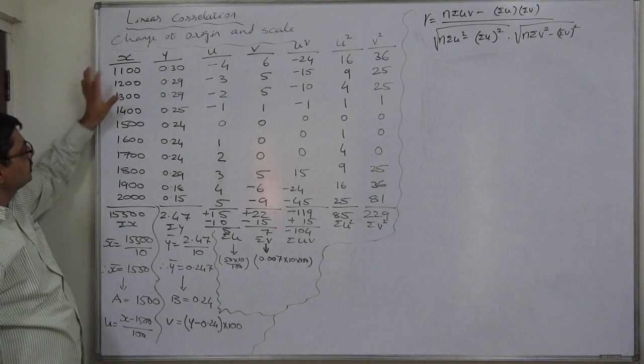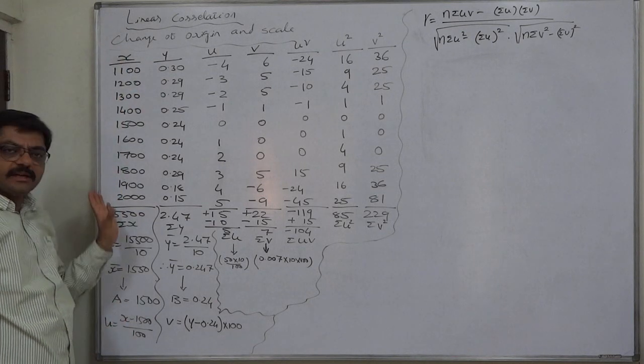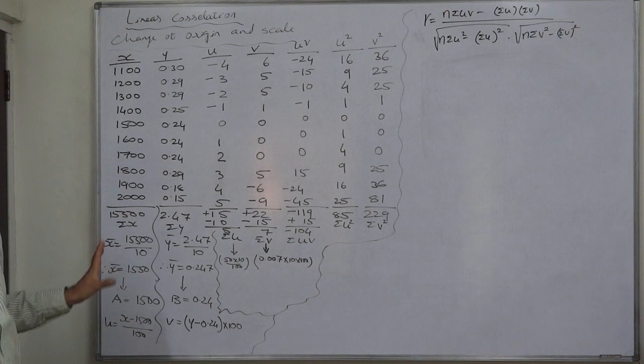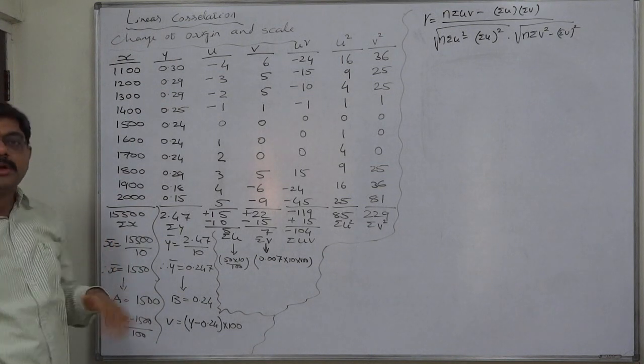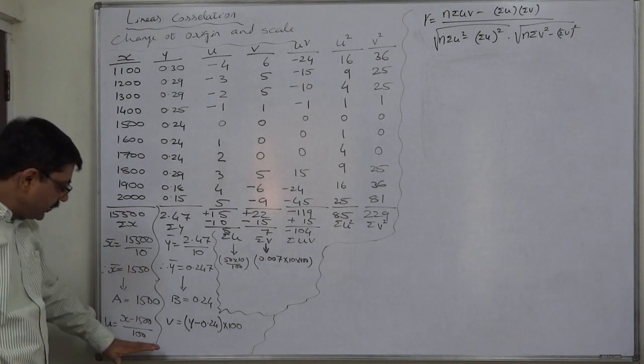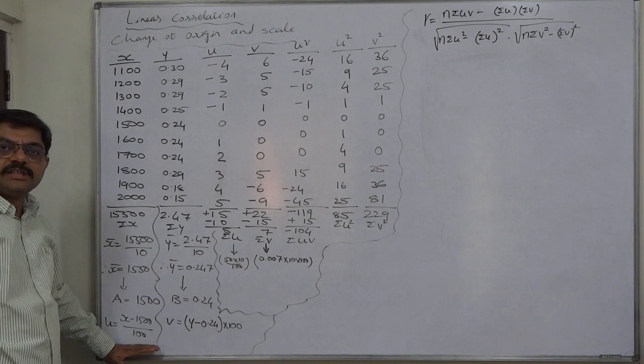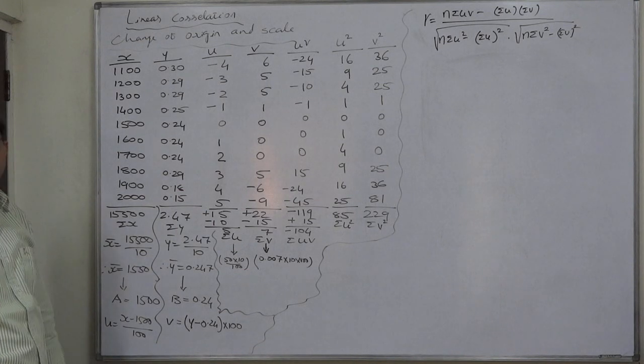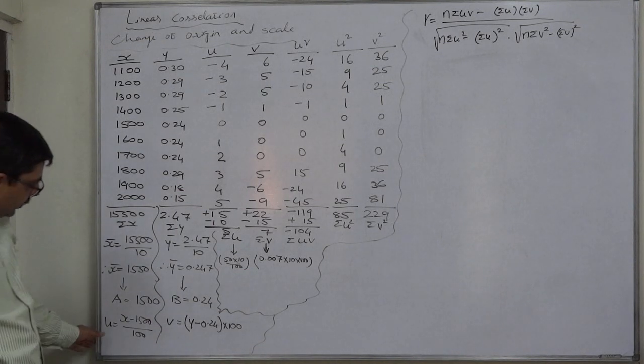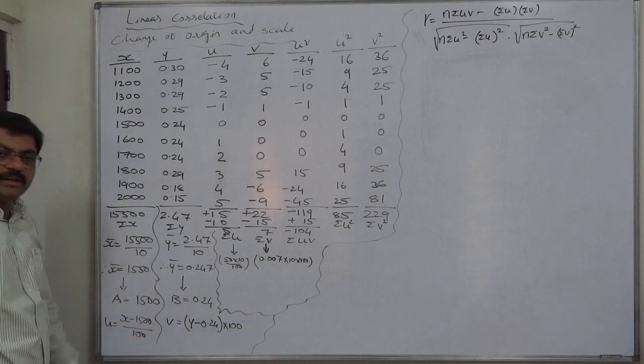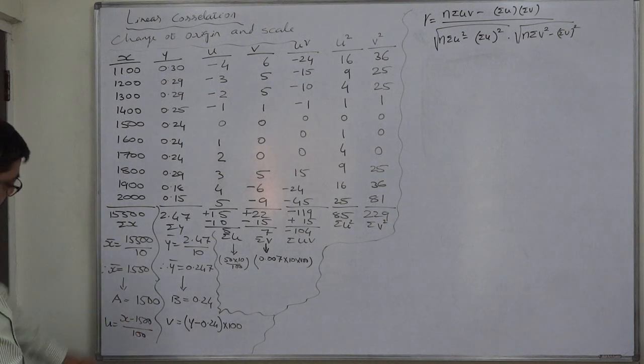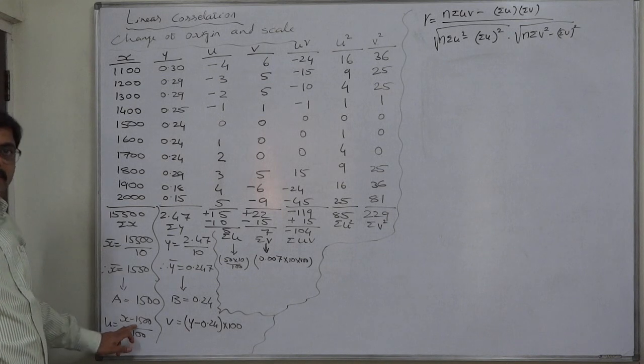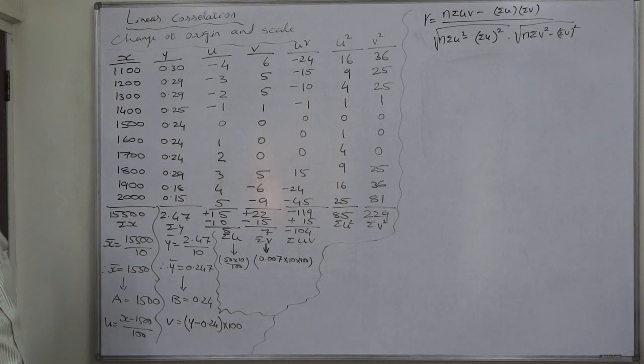Since these values are in hundreds, as well as the deviations after subtracting 1,500 from each value will also be in hundreds, we're going to use change of scale by dividing them by 100. So ultimately u will be (x minus 1,500) divided by 100 - that's change of origin divided by 100 for change of scale.